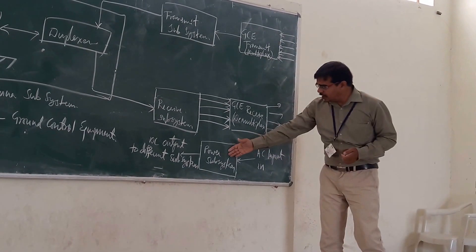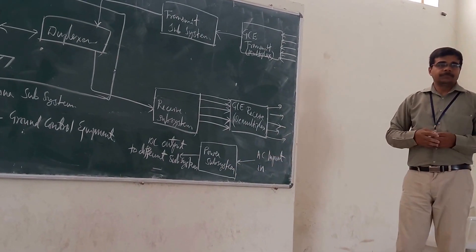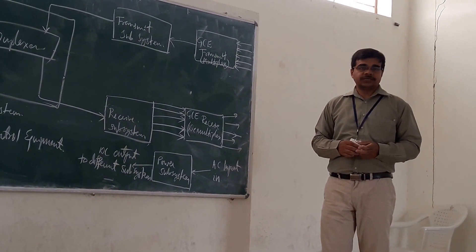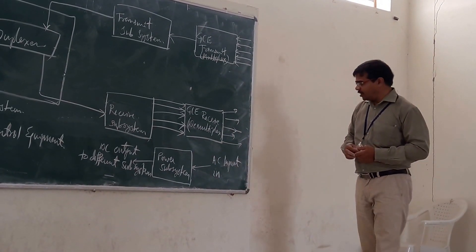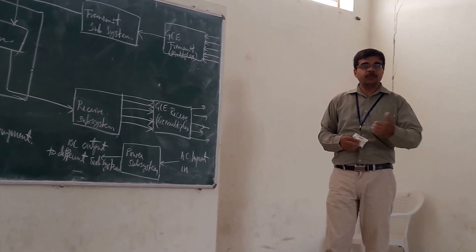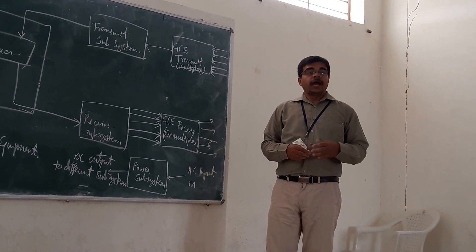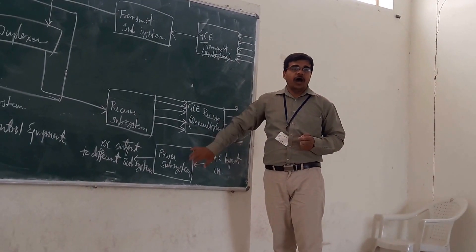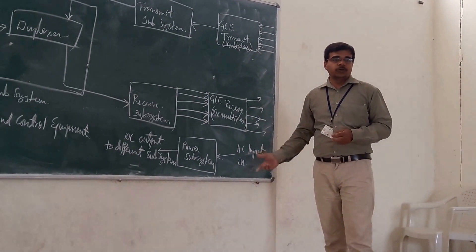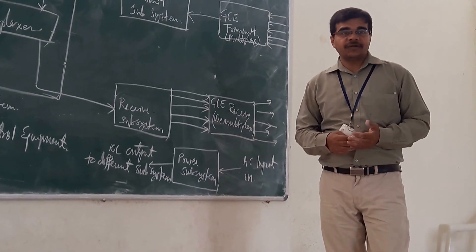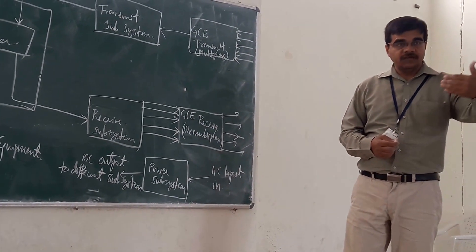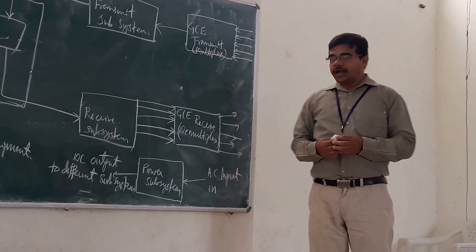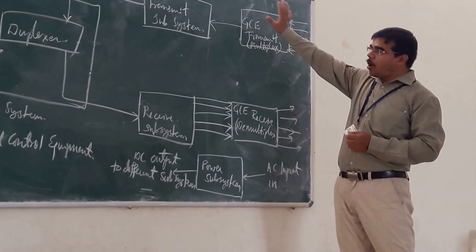Apart from this, you will need one separate subsystem — the power subsystem. The power subsystem provides continuous power for operation at the Earth Station. We give AC input and obtain DC output, which is given to all the different blocks. Apart from regular AC input, we can also have a diesel generator, battery, and inverter as additional power sources, so that we have a continuous power supply to all the different blocks.